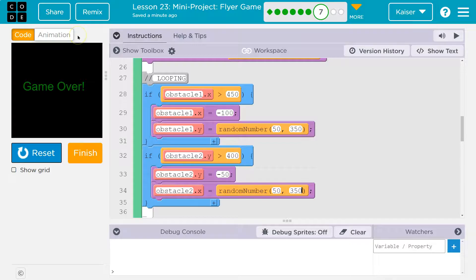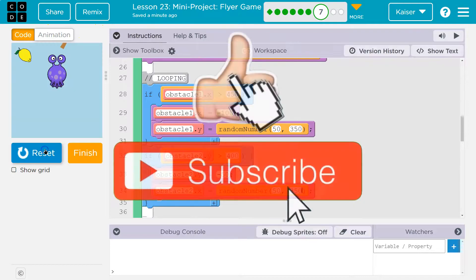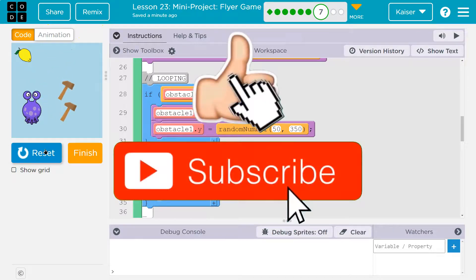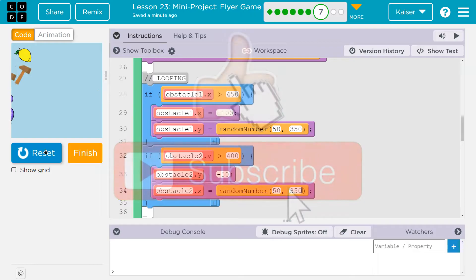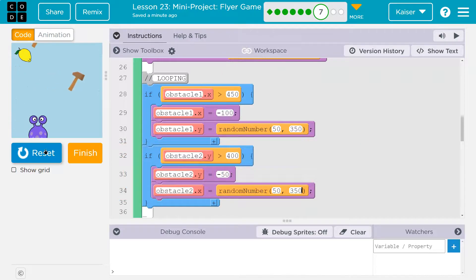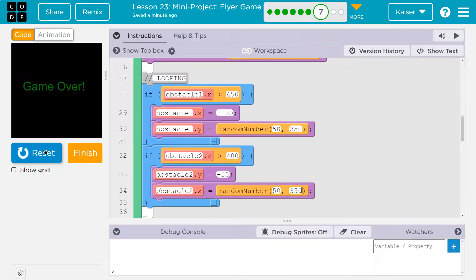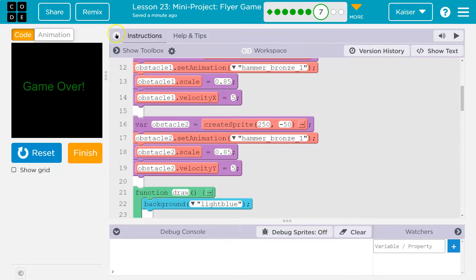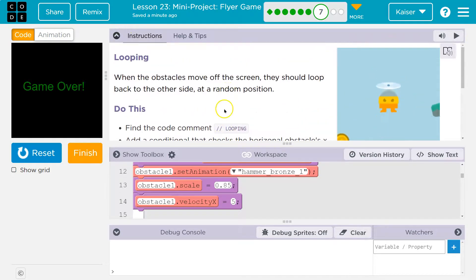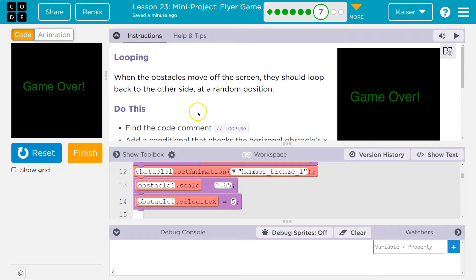Our obstacle doesn't go to negative 50 unless it is greater than 450 x, then it goes to negative 100 x and random y value somewhere. Same thing with this—our obstacle 2 does not go to the top unless it is already off the screen, greater than 400. And so now we have the makings of a game that I'm not very good at. I'm still alive. Awesome. All right, well I think what's next is our coin animation thing. Onward.